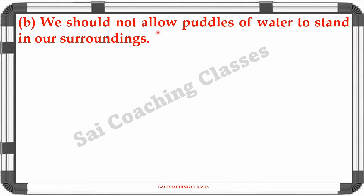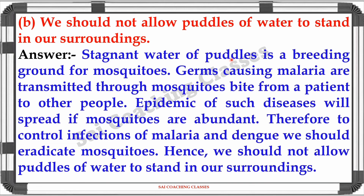Question B: We should not allow puddles of water to stand in our surroundings. Answer: Stagnant water in puddles is a breeding ground for mosquitoes. Germs causing malaria are transmitted through mosquito bites from a patient to other people. An epidemic of such diseases will spread if mosquitoes are abundant. Therefore, to control infection of malaria and dengue, we should eradicate mosquitoes. Hence, we should not allow puddles of water to stand in our surroundings.